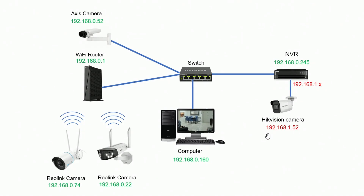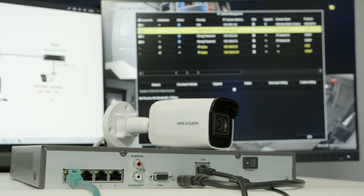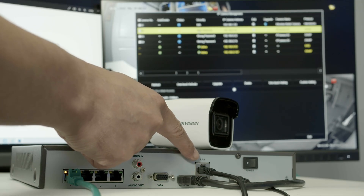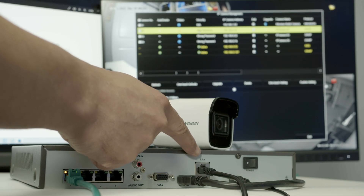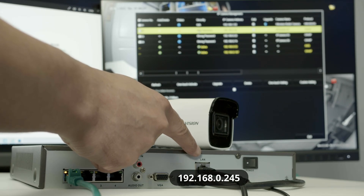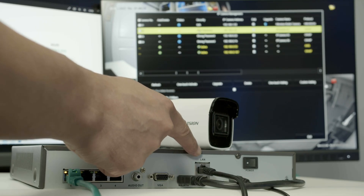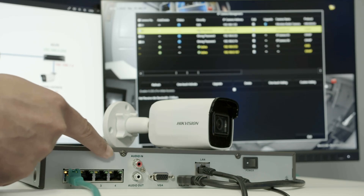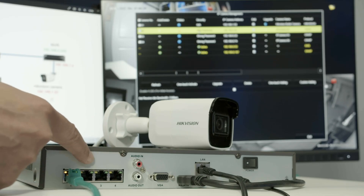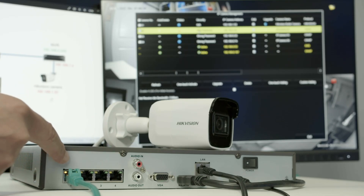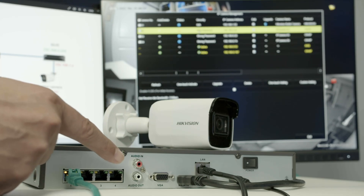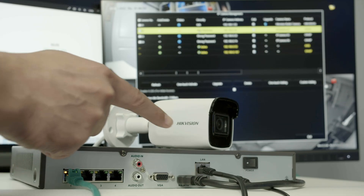I have my Hikvision camera connected to this second network at 192.168.1.52. Here's the interface of the NVR that connects to my switch, with IP 192.168.0.245 — network zero. The other interface is network one. Any camera connected to one of these four PoE ports is going to get an IP of 192.168.1.something. That's the case for this Hikvision camera. They are different networks.